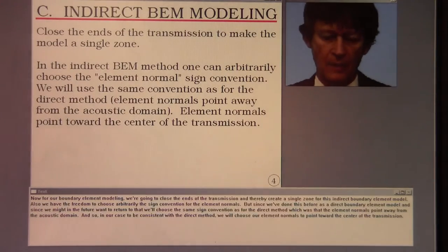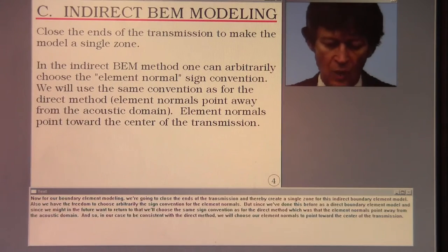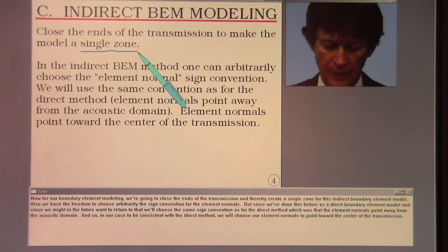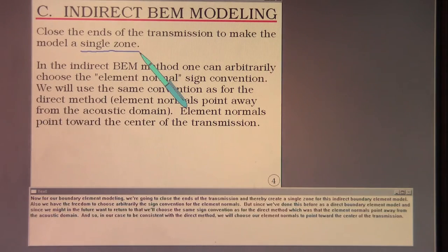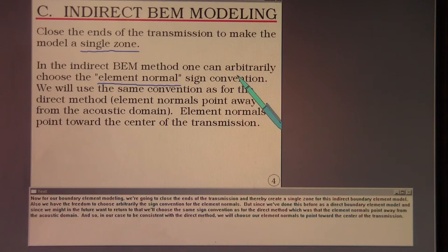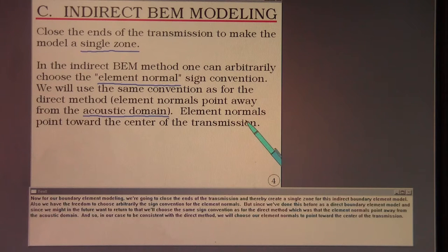Now for our boundary element modeling, we're going to close the ends of the transmission and thereby create a single zone for this indirect boundary element model. Also we have the freedom to choose arbitrarily the sign convention for the element normals. But since we've done this before as a direct boundary element model, we'll choose the same sign convention as for the direct method, which was that the element normals point away from the acoustic domain. So we will choose our element normals to point toward the center of the transmission.